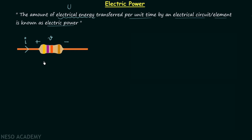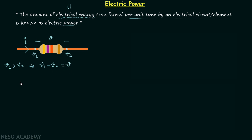The potential difference is the difference in the electric potentials of two points. Here, the potential difference V is the difference between the electric potentials V1 and V2 at the two terminals. The positive polarity terminal has V1 at higher potential compared to V2, so the potential difference V equals V1 minus V2.